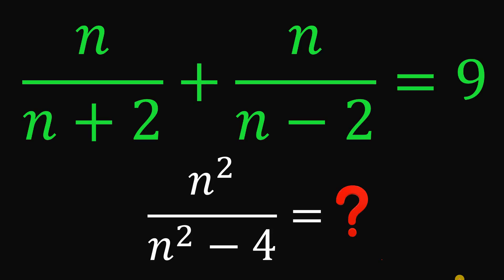For today's video, we will answer a math challenge given by one of our followers. And the question goes like this. Given this equation, n over n plus 2 plus n over n minus 2 equals 9, then our goal is to find the numerical value of n squared over n squared minus 4.